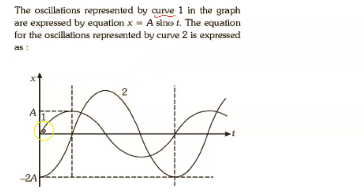Curve 1 is a sine curve, a sinusoidal curve, and its equation is simple: x = A sin ωt with amplitude A.